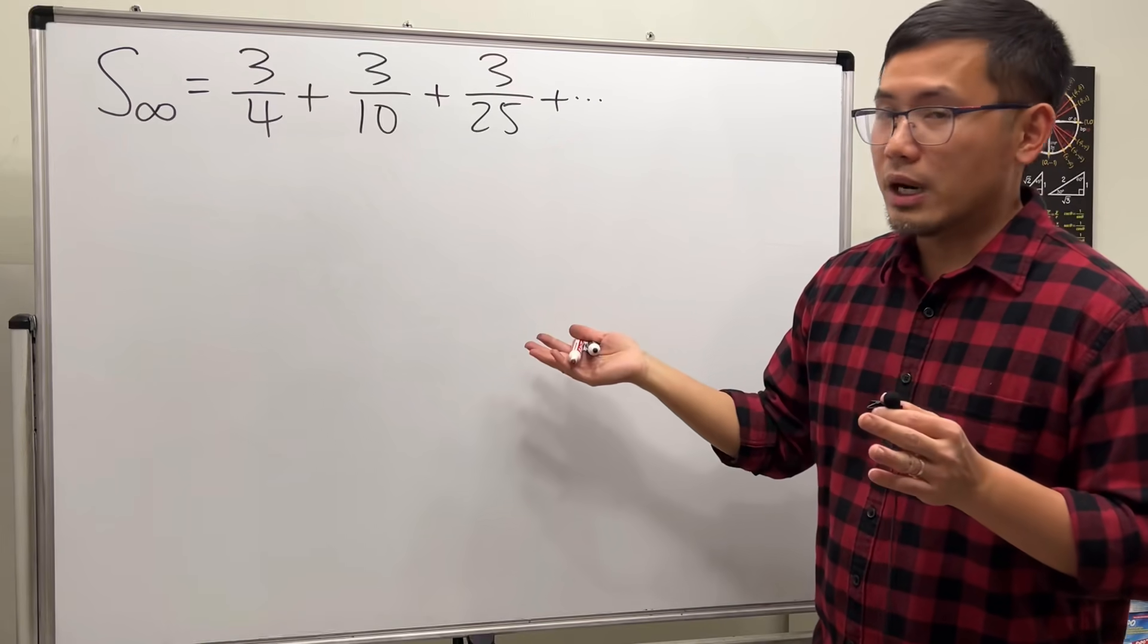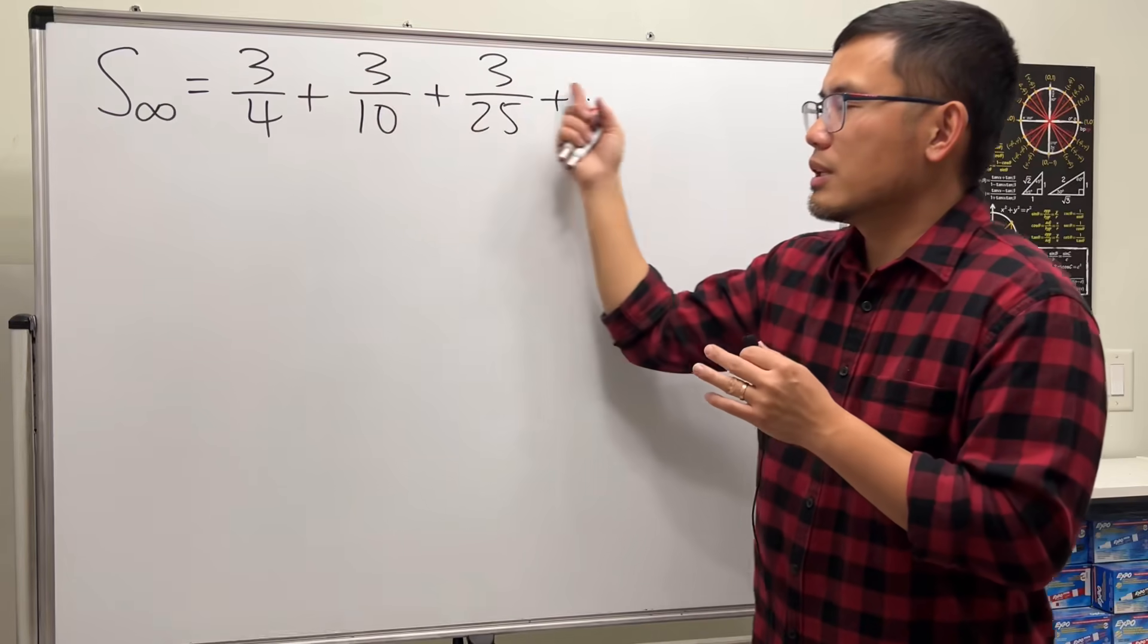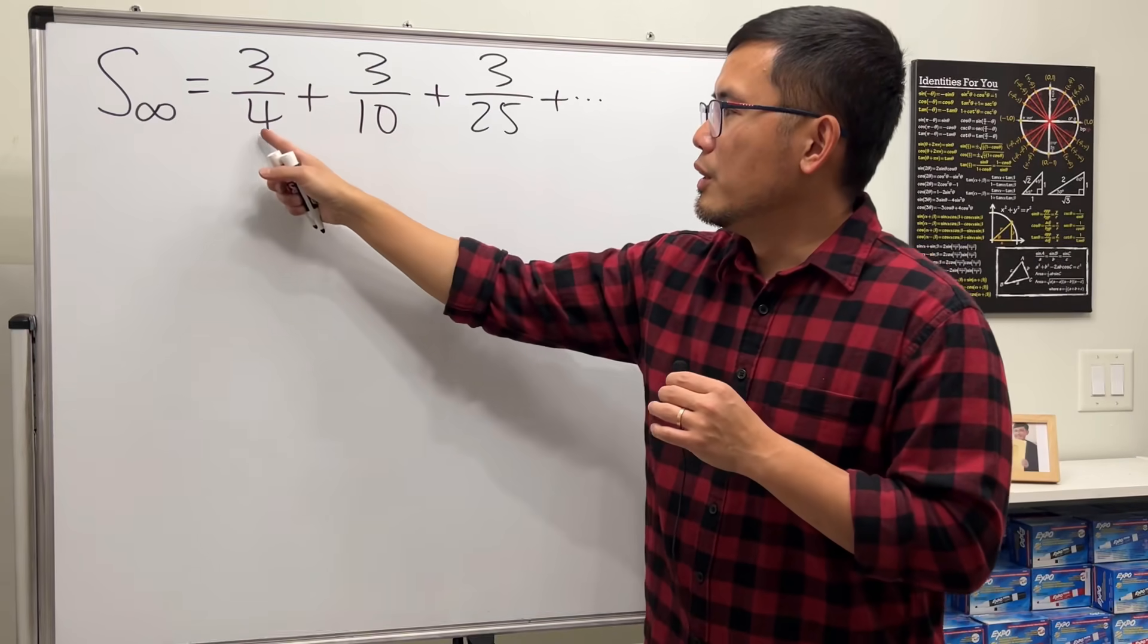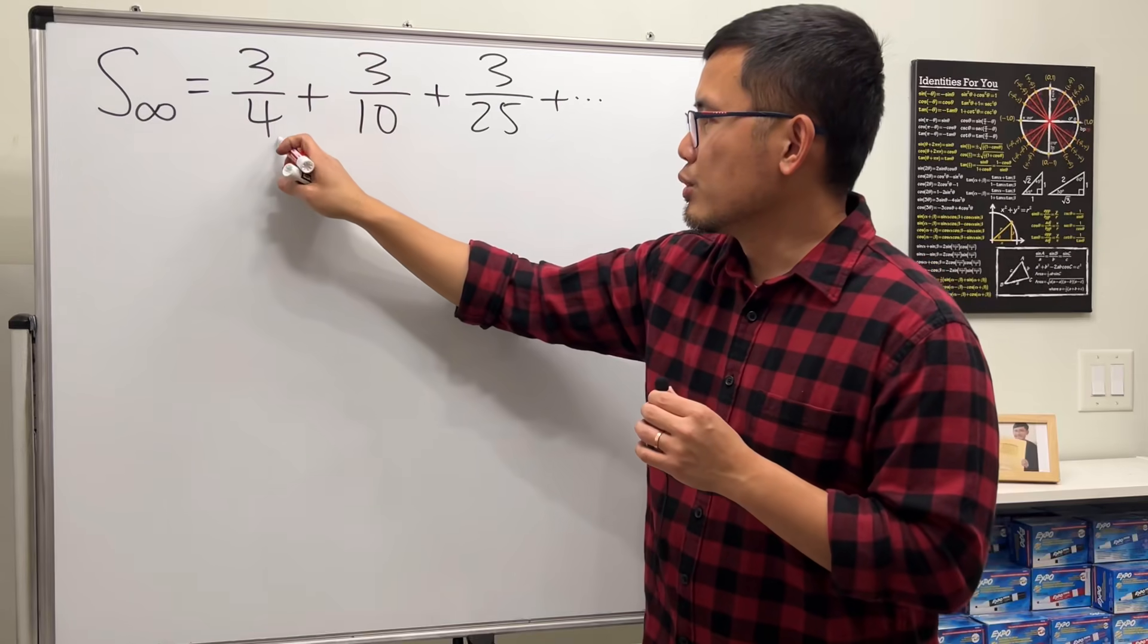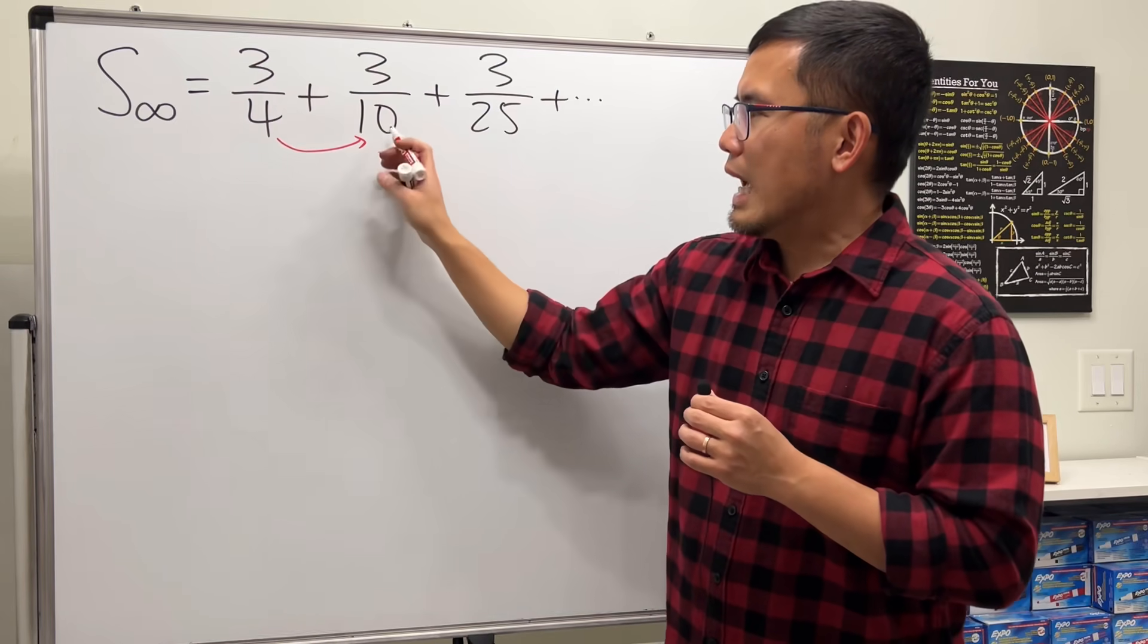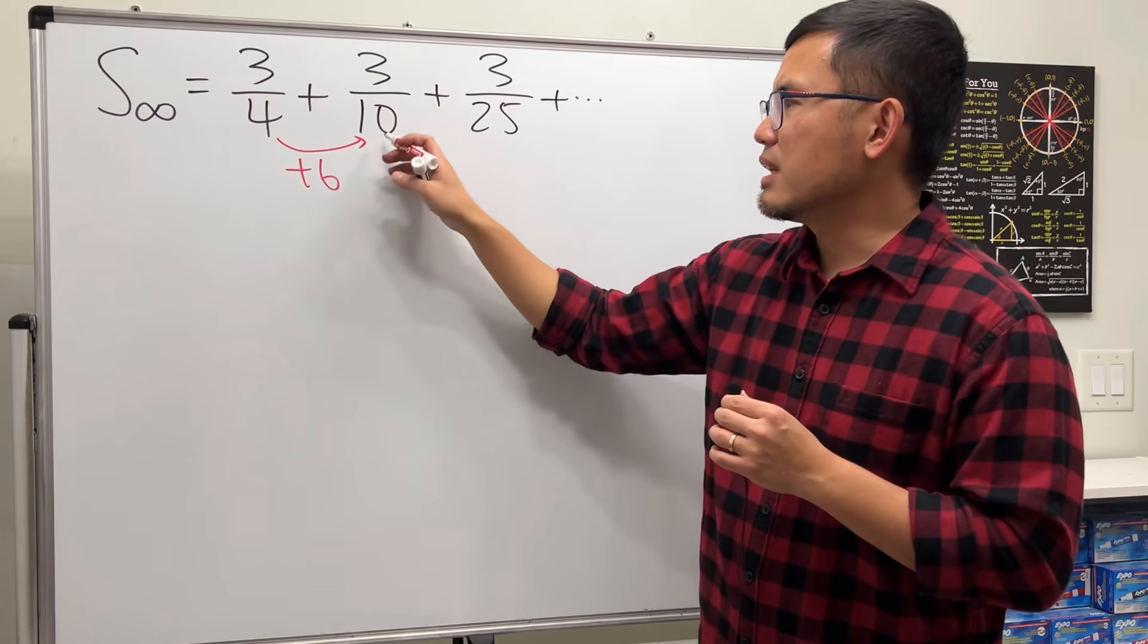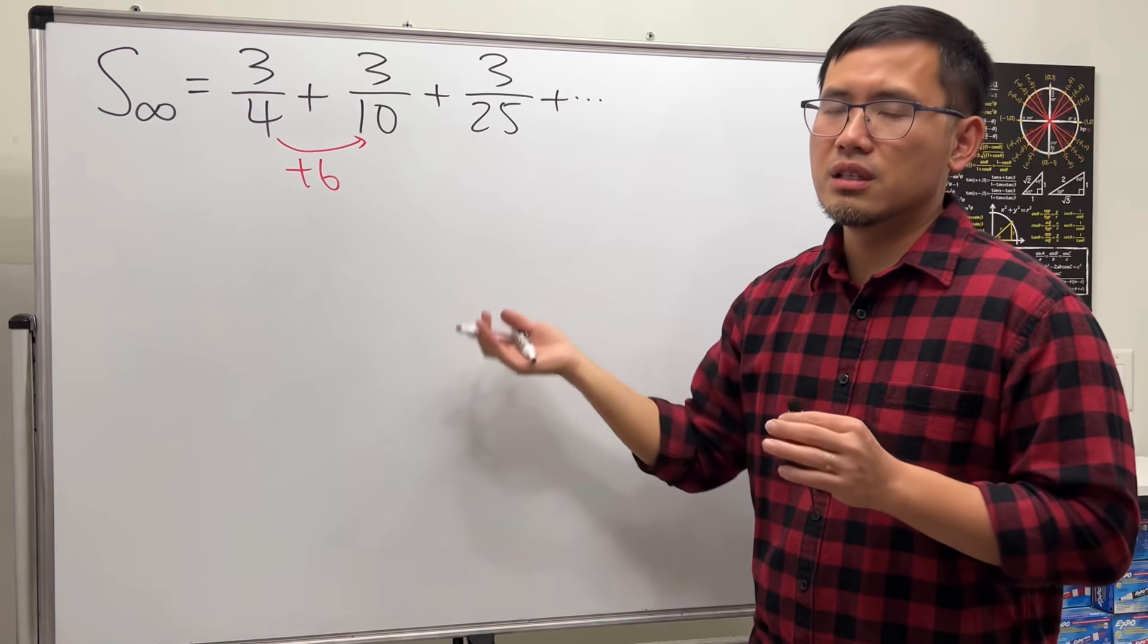So this is what I did first. I just thought that the top is just always 3, and then I look at the bottom: 4, 10, 25. I was trying to find a pattern. Let's do the usual thing - do we just add? Well, that's plus 6, but that doesn't work. 10 plus 6 is 16, not 25.